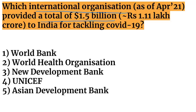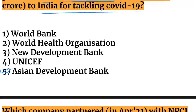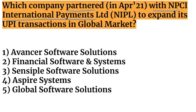Next question: which international organization provided a total of 1.5 billion dollars — approximately 1.11 lakh crore rupees — to India for tackling COVID-19? The organization that provided this amount is ADB — the Asian Development Bank.